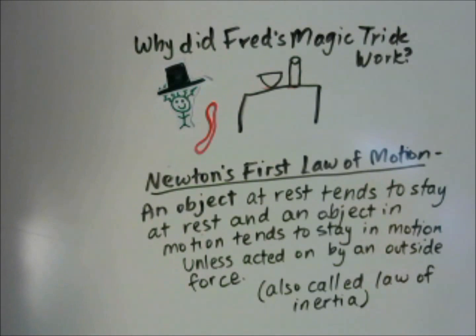Newton's first law of motion is the reason that you wear a seatbelt. If you didn't have a seatbelt and your car hit another car, you would continue to move unless you're acted on by another force. So that force without a seatbelt would be the windshield.